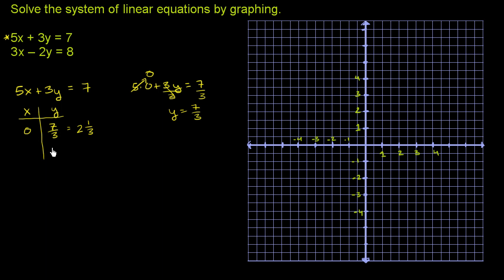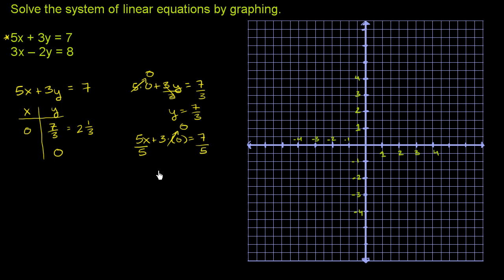Now let's set y equal to 0. When y is equal to 0, we get 5x plus 3 times 0 equals 7, so 5x equals 7. Divide both sides by 5 and we get x equals 7 fifths, which is the same thing as 1 and 2 fifths.